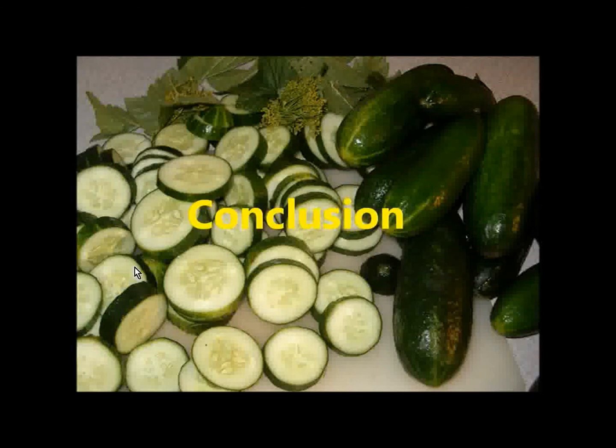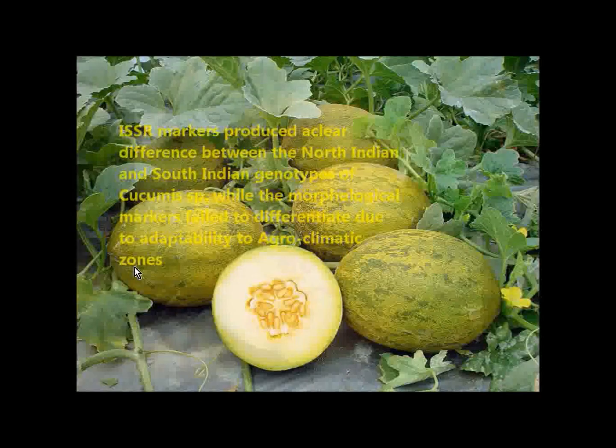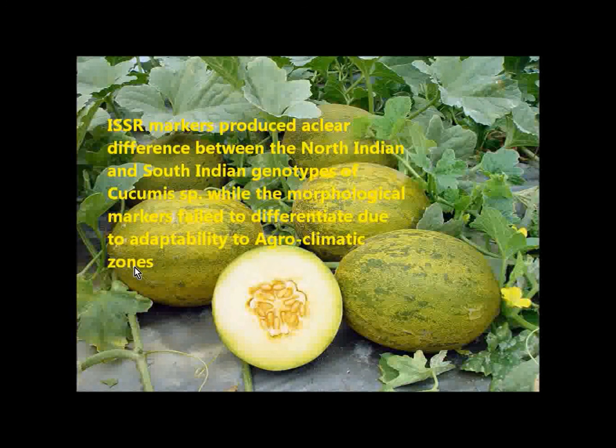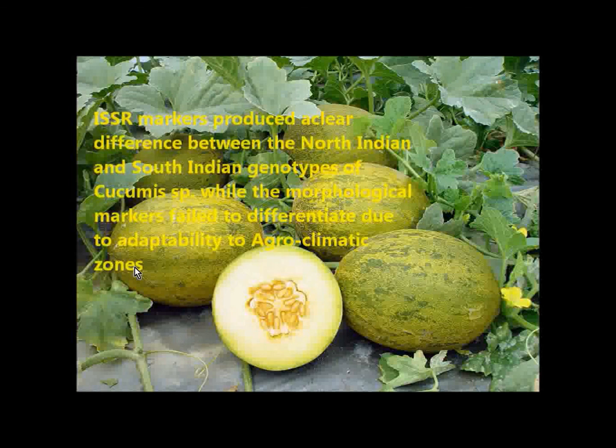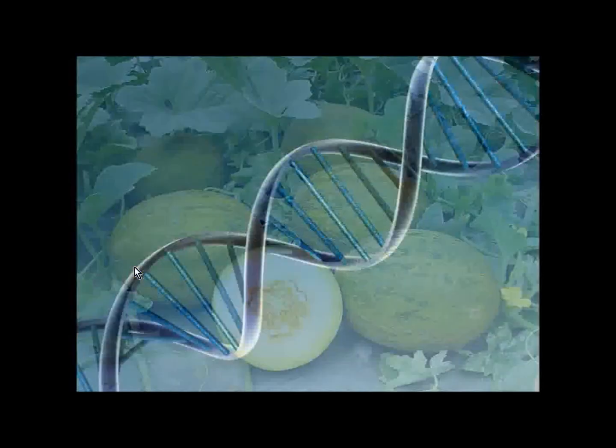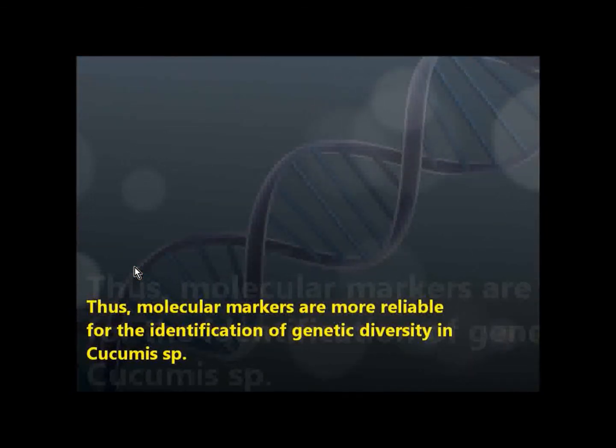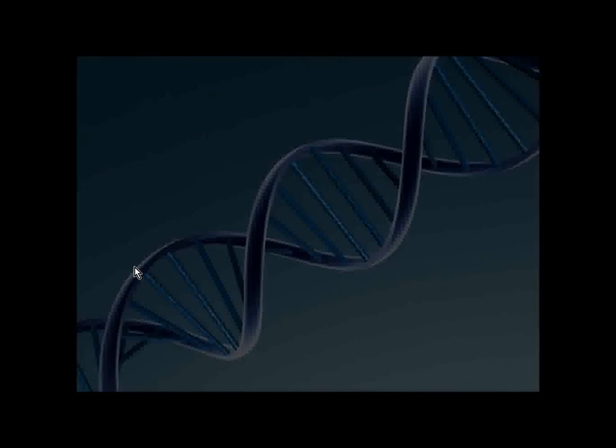Conclusion. The ISSR markers produced a clear difference between the North Indian and the South Indian genotypes of Cucumus species, while the morphological markers failed to differentiate due to adaptability to agro-climatic zones. Thus, molecular markers are more reliable for the identification of genetic diversity in Cucumus species. Thank you.